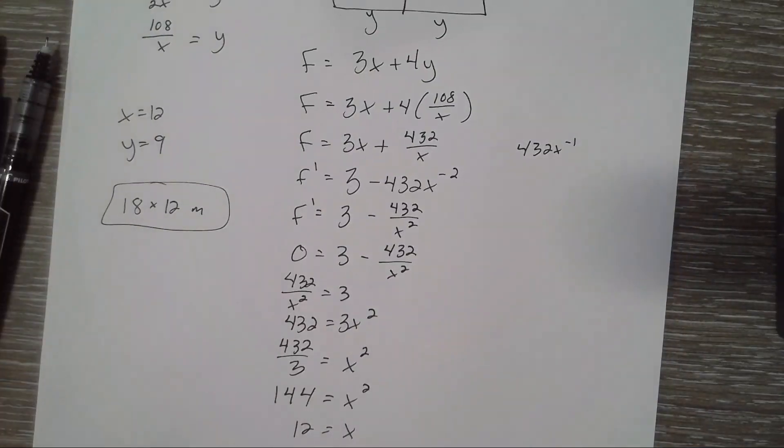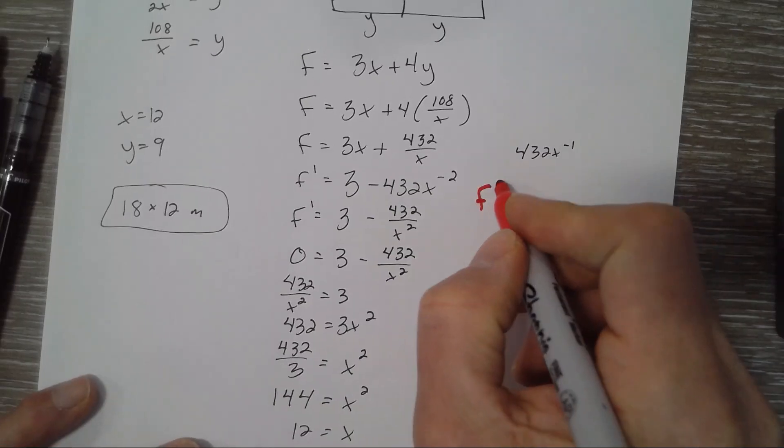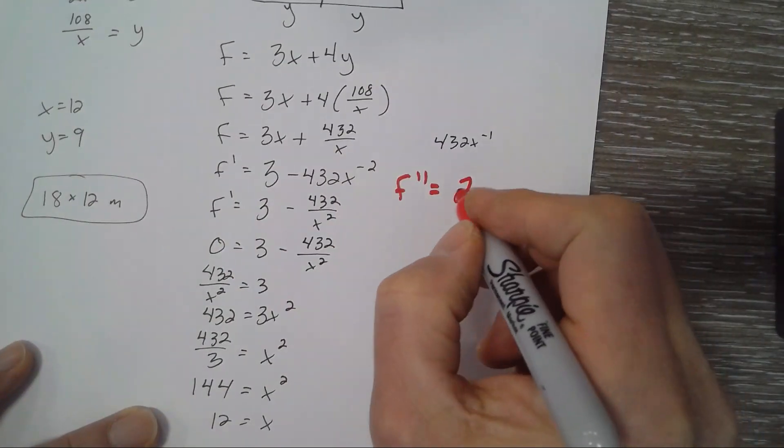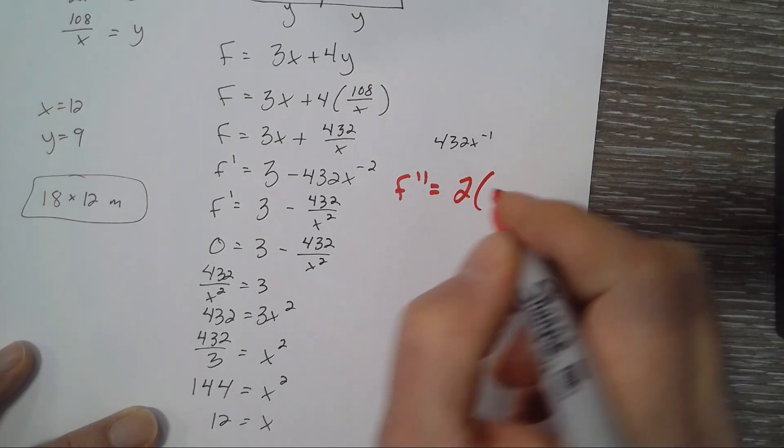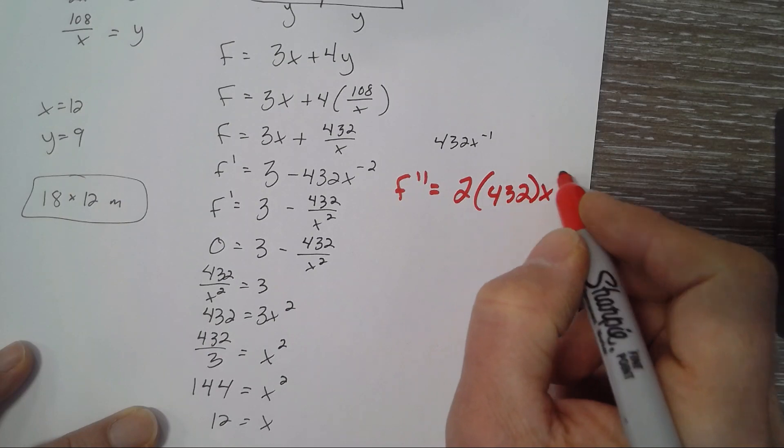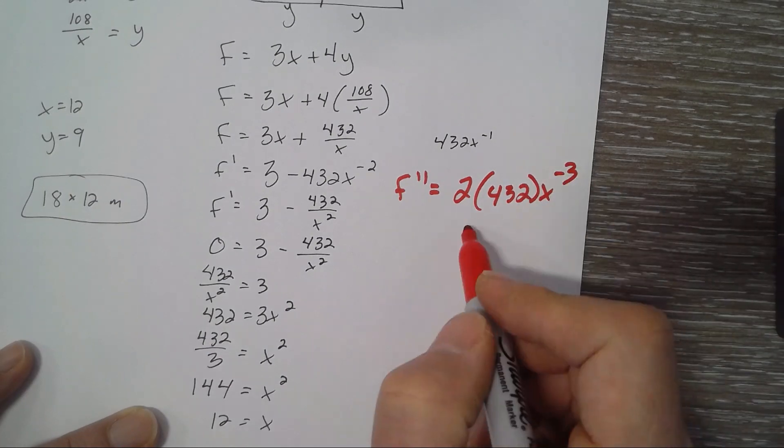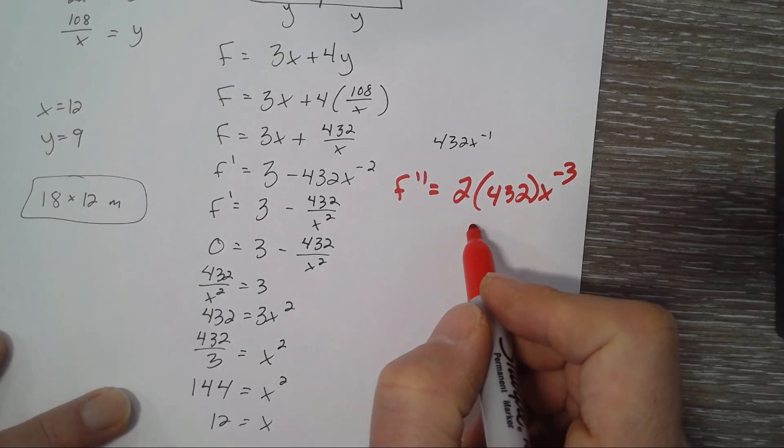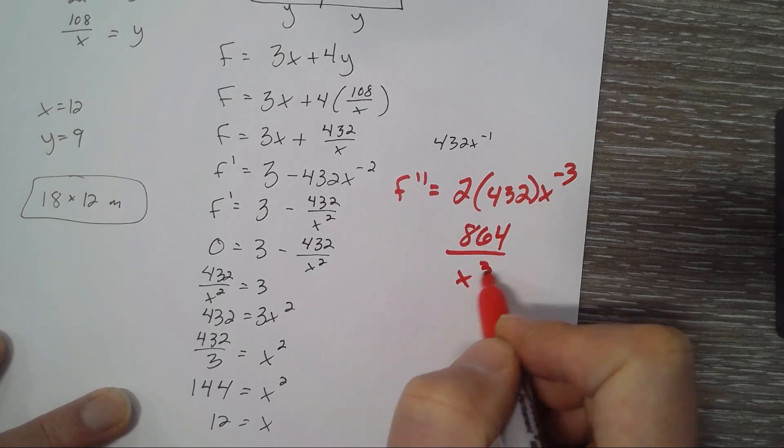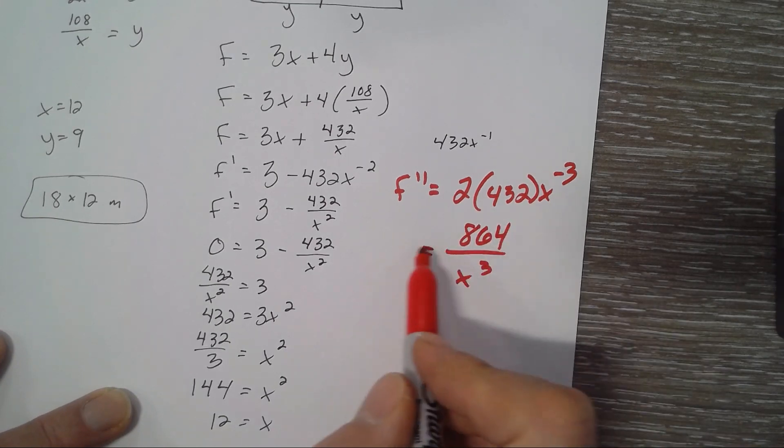we could do another derivative here. So F double prime would be 2 times 432 X to the negative 3. So what's that? 864 over X cubed. Or F the second derivative.